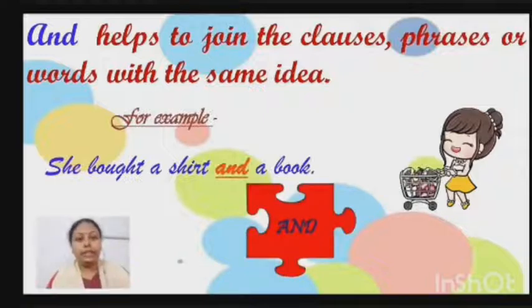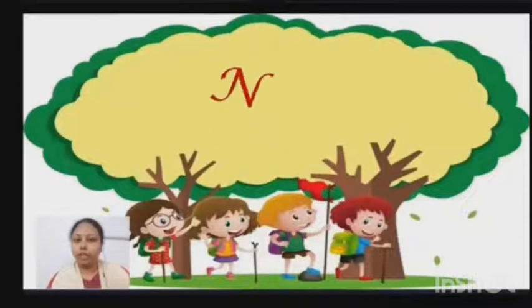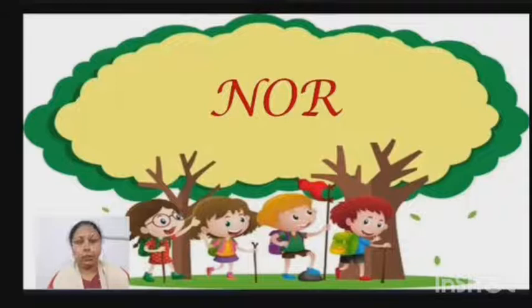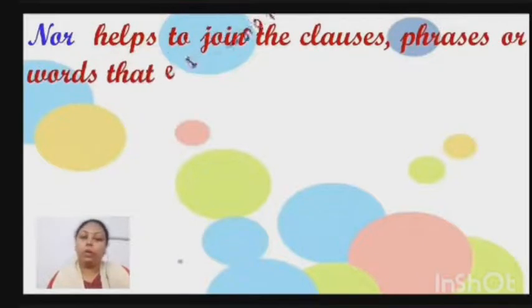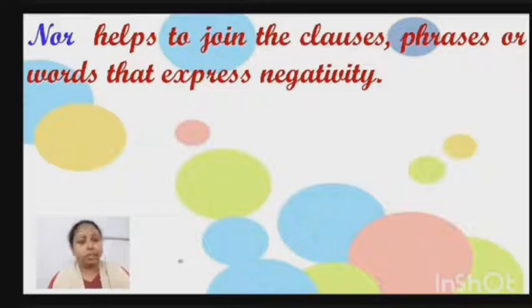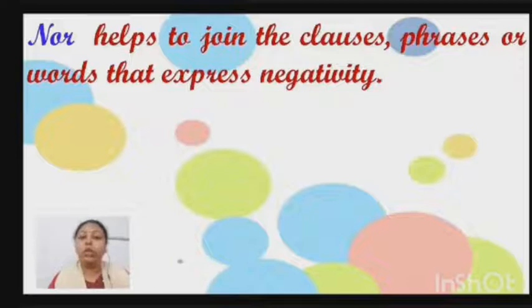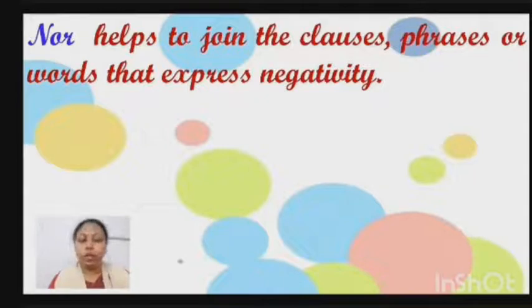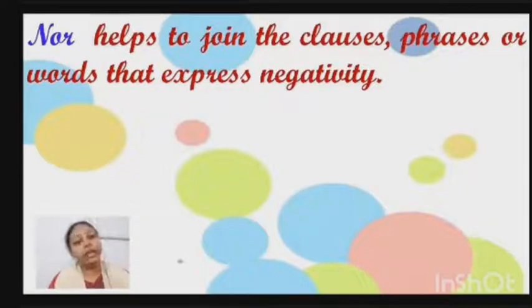Now let us understand the usage of our third coordinating conjunction, that is 'nor'. Nor helps us to join clauses, phrases, or words that express negativity. How are we going to find negative sentences? Whenever we see that a sentence contains 'not', it tells us that the sentence is negative. Does not, do not, cannot, will not — these are all examples of negative sentences.